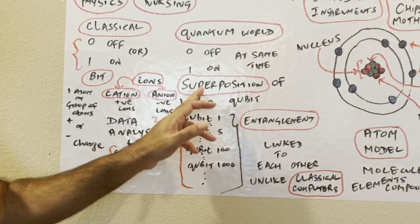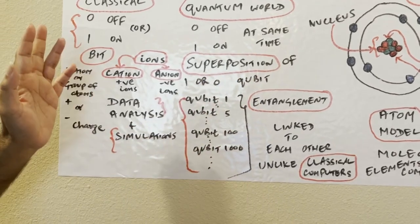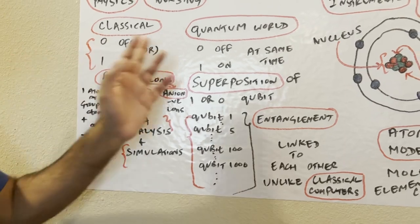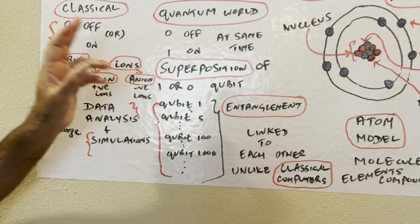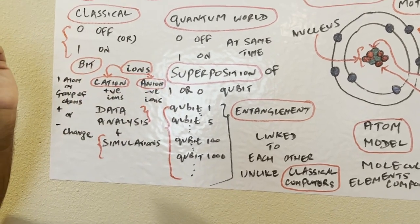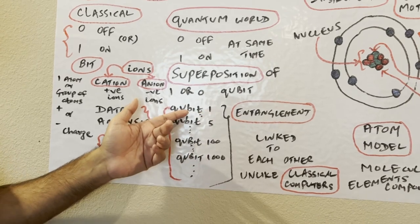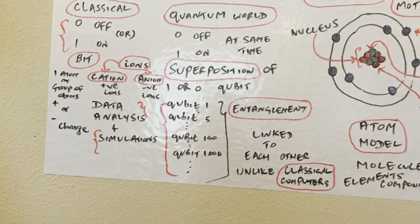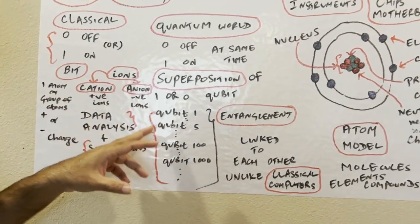Let's come to this side. In quantum world, on or off at the same time, it's called the superposition of the qubit, quantum bits. When you talk about classical, you talk about binary digits. Here you talk about quantum digits, qubit. And last video I mentioned about quantum entanglement.